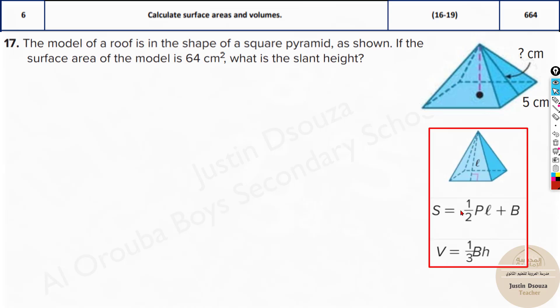The surface area formula is S = ½PL + B. Volume is V = ⅓Bh. We cannot use the volume formula because they have given the surface area and we need L. We just use the surface area formula.